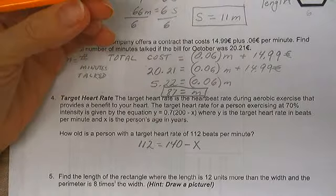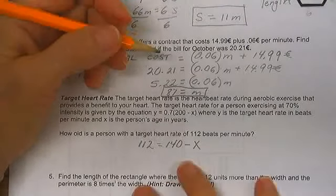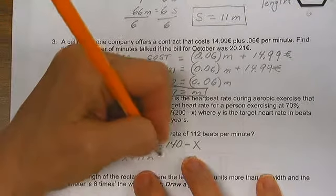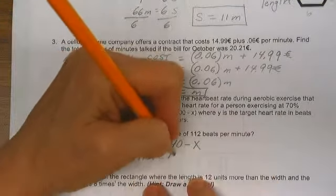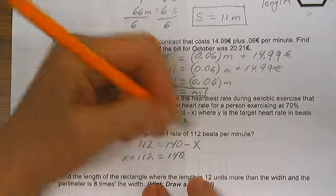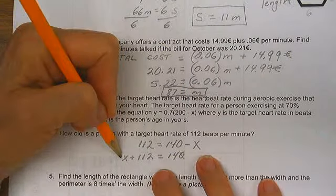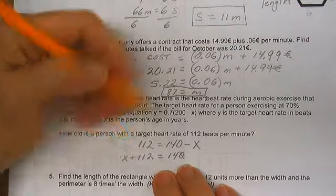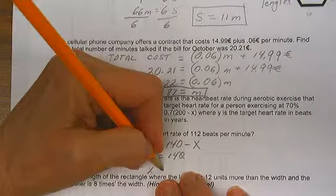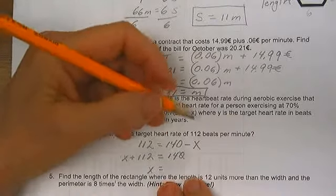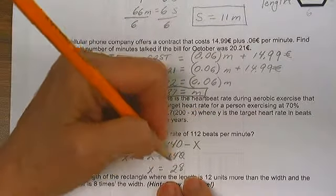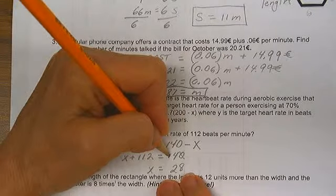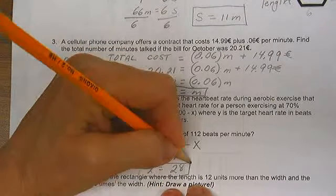So now I can add x to each side. x plus 112 equals 140. Added x to each side. Now I can subtract 112 from each side. x is equal to 28. Is 28 plus 112 equal to 140? I believe that it is.